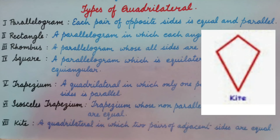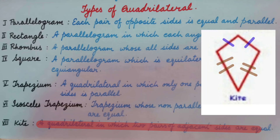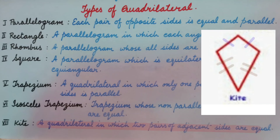Kite. A kite is a quadrilateral in which two pairs of consecutive sides are equal. None of the opposite sides are parallel in a kite.